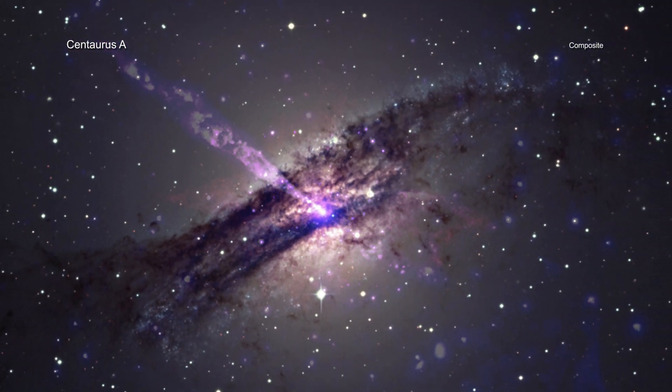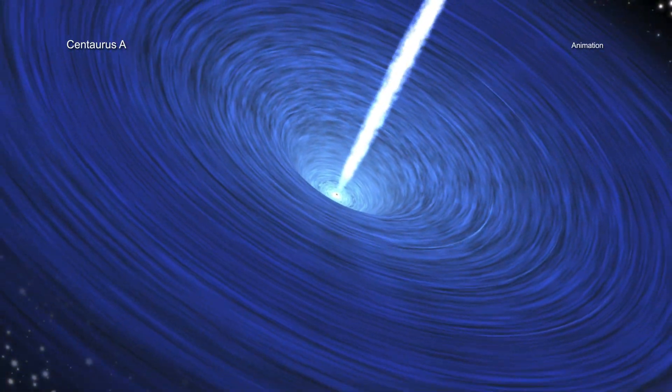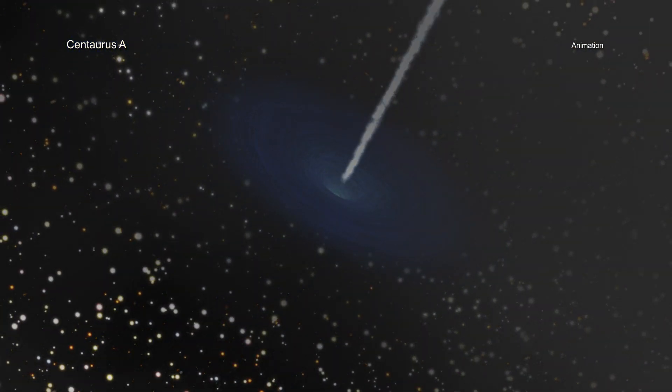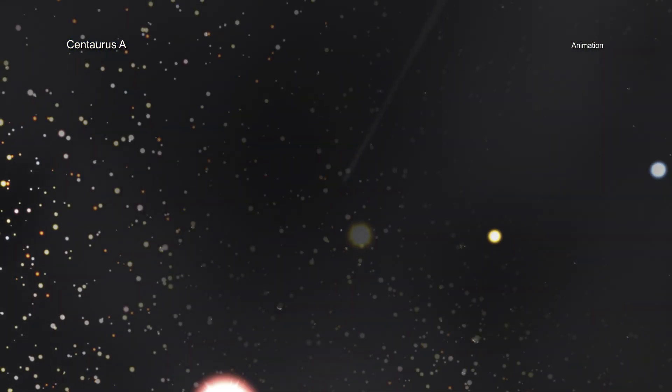Astronomers have long studied Cen A because it has a supermassive black hole in its center sending out spectacular jets that stretch across the entire galaxy.